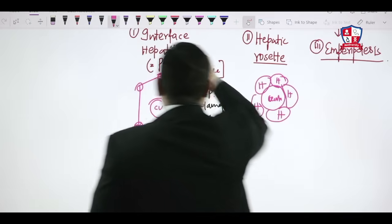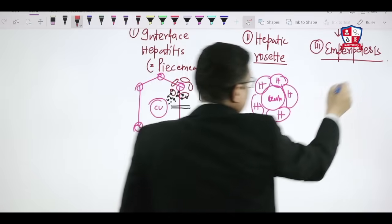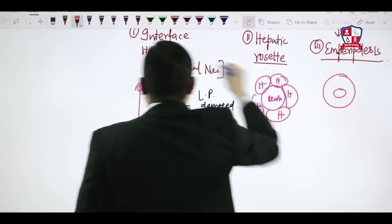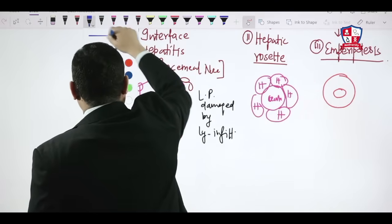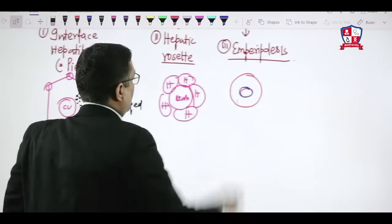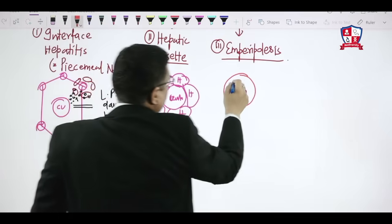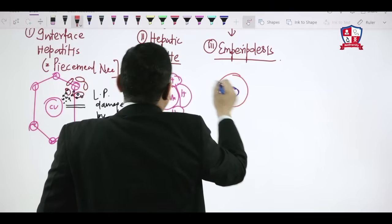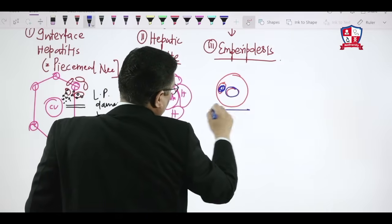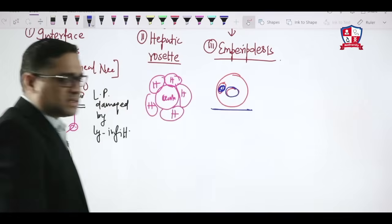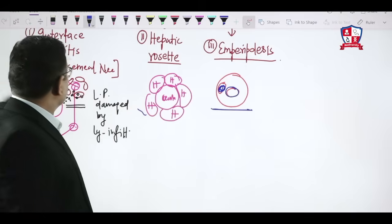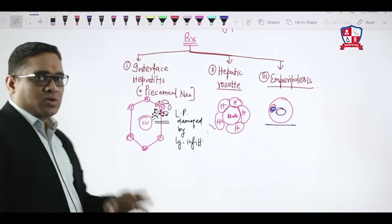Emperipolesis refers to the active penetration of one cell into another cell. On histopathology, you will see a cell with its nucleus, and another cell entering it — two nuclei visible in one cell. This active penetration of one cell into another is called emperipolesis, and these are the three characteristic biopsy findings of autoimmune hepatitis.